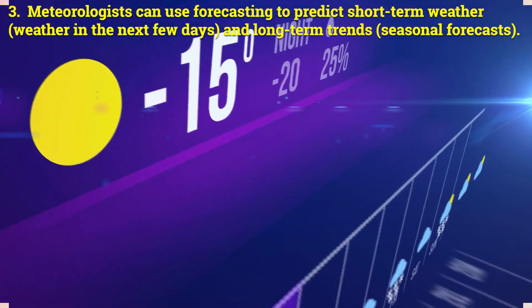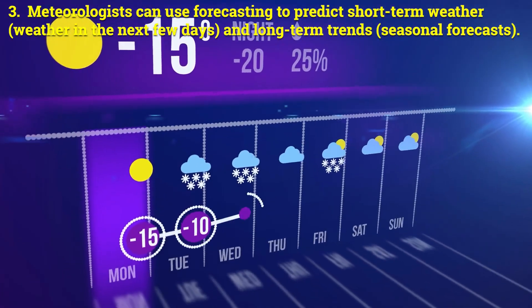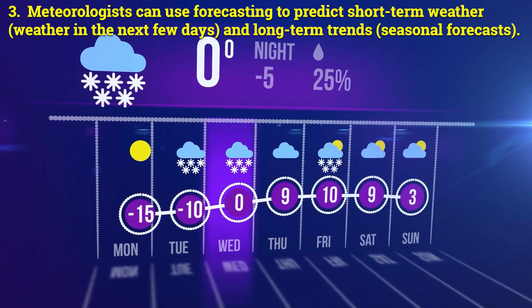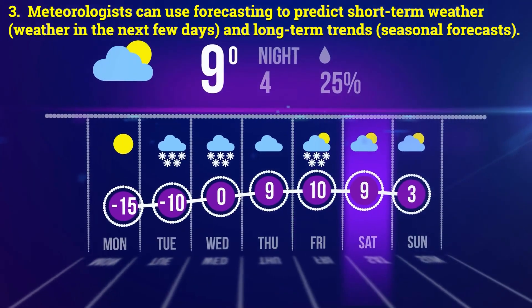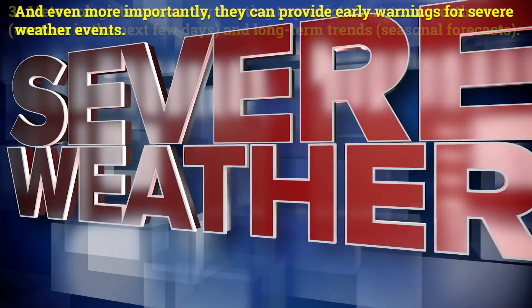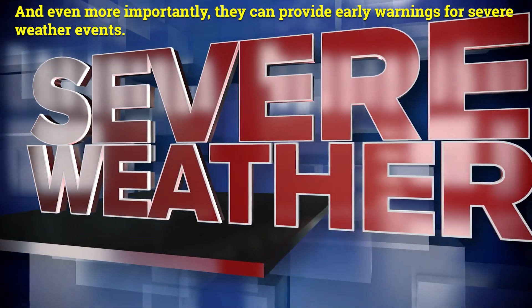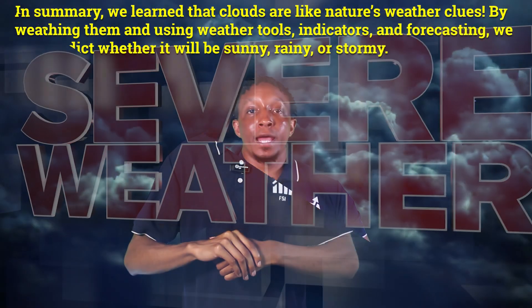Number three, meteorologists can use forecasting to predict short-term weather, which is weather in the next few days, and long-term trends, which are seasonal forecasts. And even more importantly, they can provide early warnings for severe weather events.